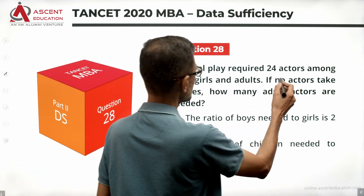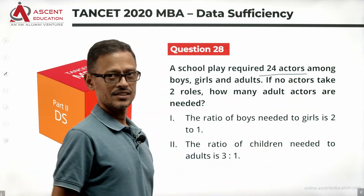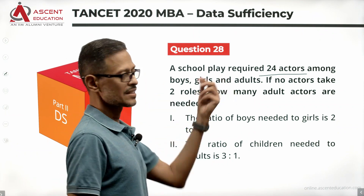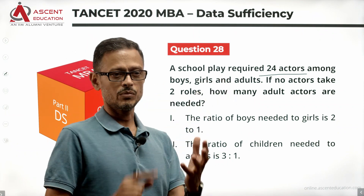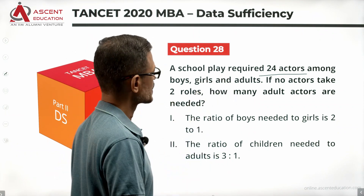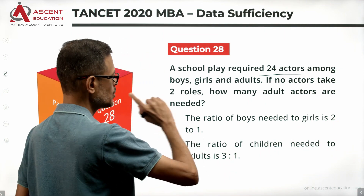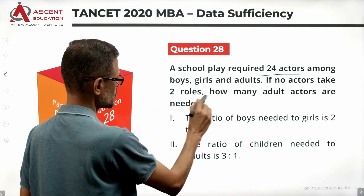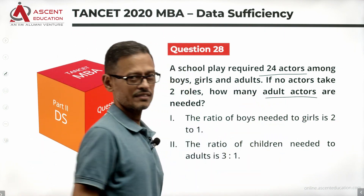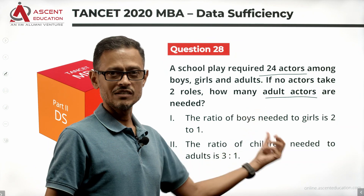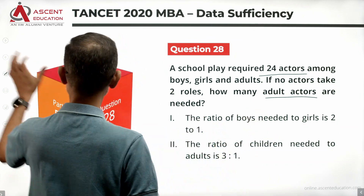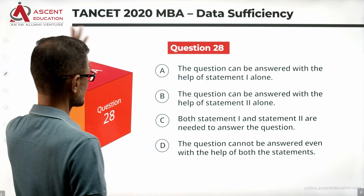A school play required 24 actors among boys, girls and adults. Boys, girls and adults are set to 24. If no actors take two roles, how many adult actors are needed is what the question is. As always, 2 statements are available. Take a look at the 4 answer options.